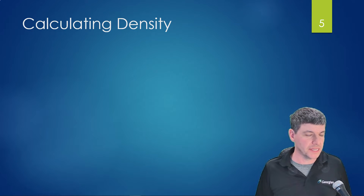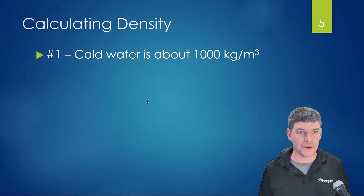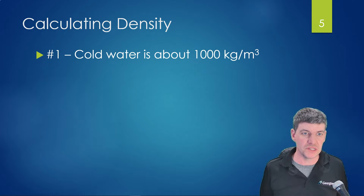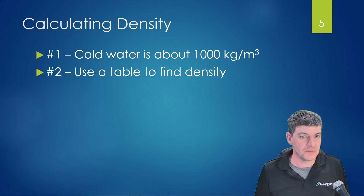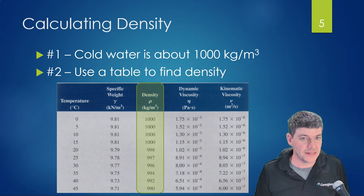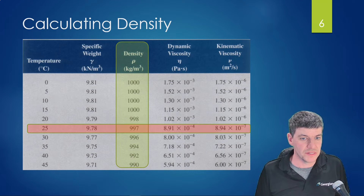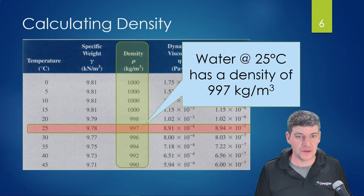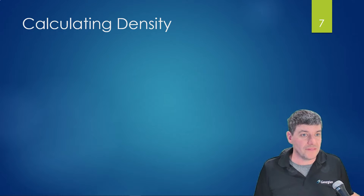We had a few ways of calculating density in this course. First, we said cold water has a density of about 1000 kilograms per cubic meter — we used that approach at the start. However, we understood that density changes with temperature, so we had a second approach: using a table to find density. For instance, at 25 degrees Celsius, that table shows density of water is 997 kilograms per cubic meter, which is our standard unit for density.